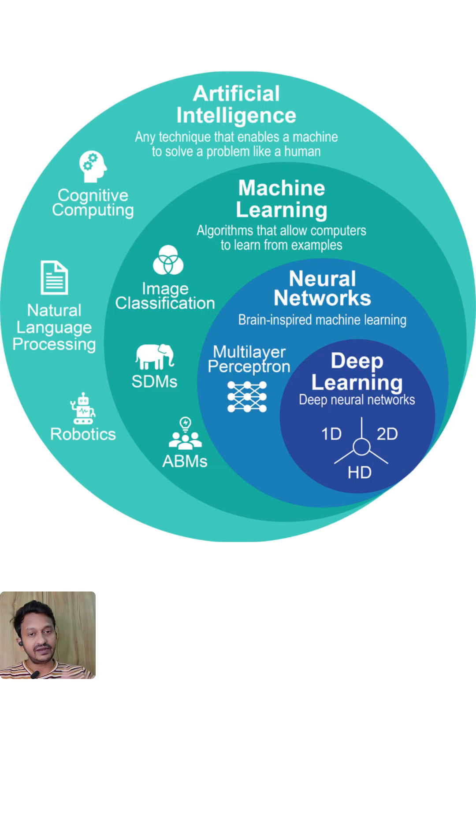Artificial intelligence is a very big ocean. So in that, if you go a little bit below, you will find machine learning. And then under machine learning, you will see deep learning. And in that, you will see generative AI, GPT models and all. So that's how different layers are there in the whole AI spectrum.